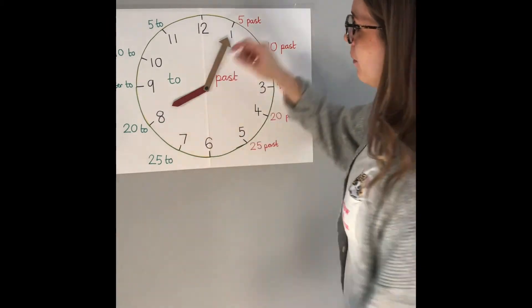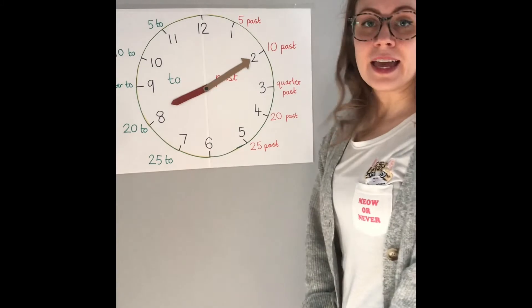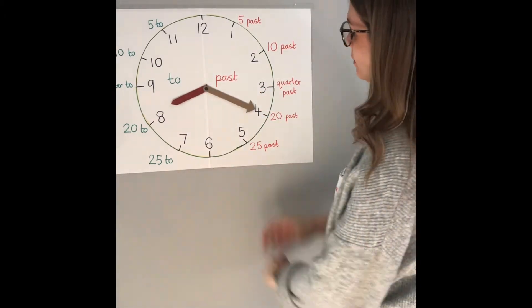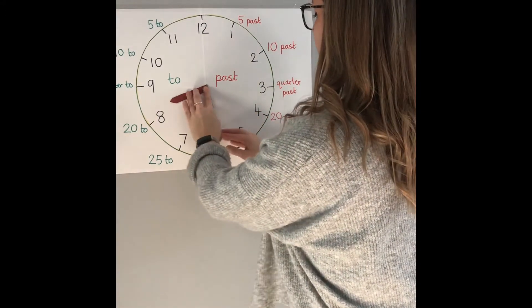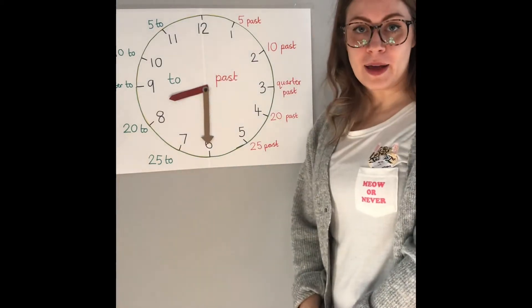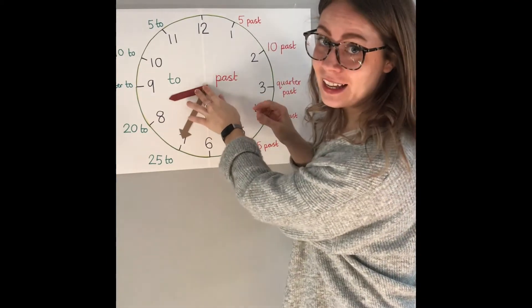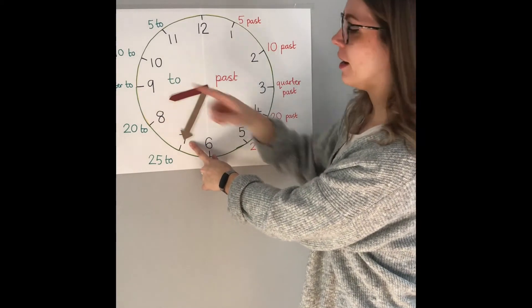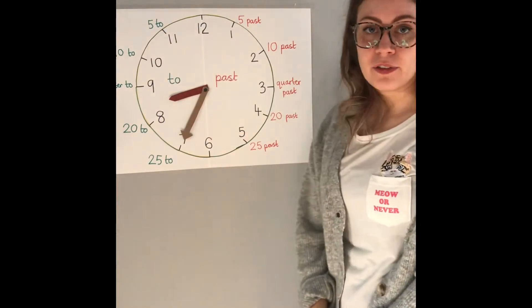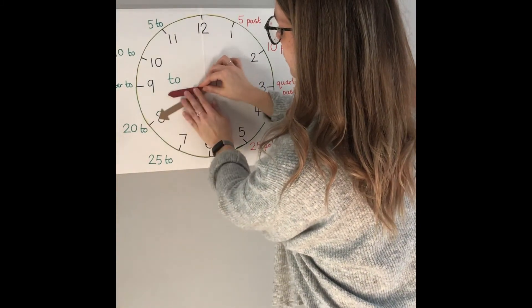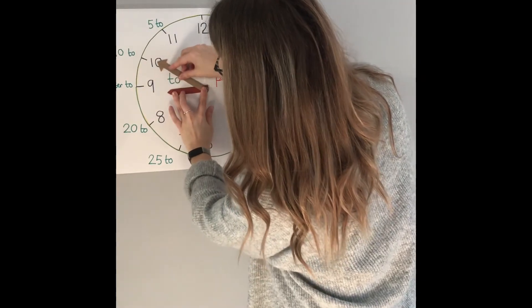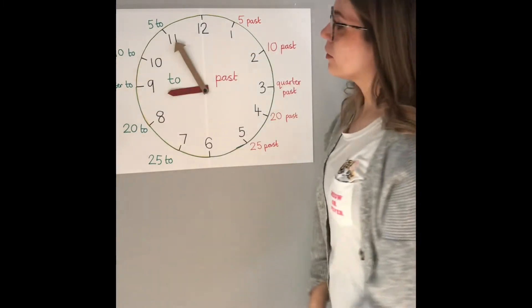Now it is five minutes past eight. Ten minutes past eight. Quarter past eight. Twenty past eight. Twenty-five past eight. Half past eight. So now we say twenty-five to, and it's the next hour we're looking at — not eight anymore, but nine. So it's twenty-five minutes to nine. Twenty to nine. Quarter to nine. Ten to nine. Five minutes to nine.